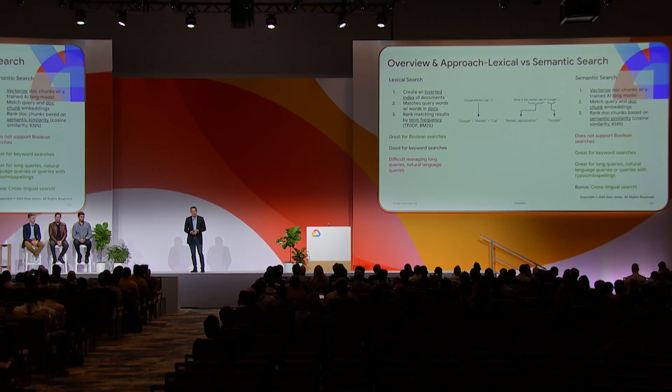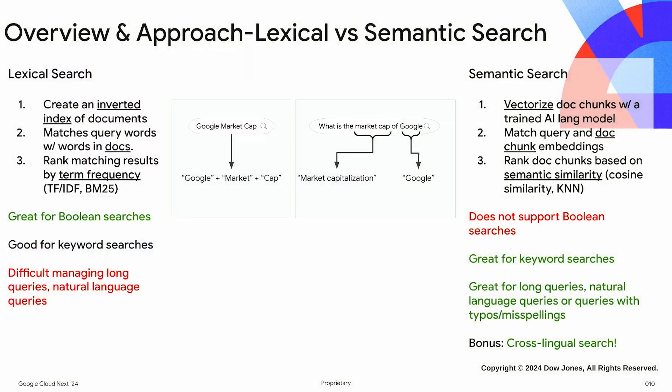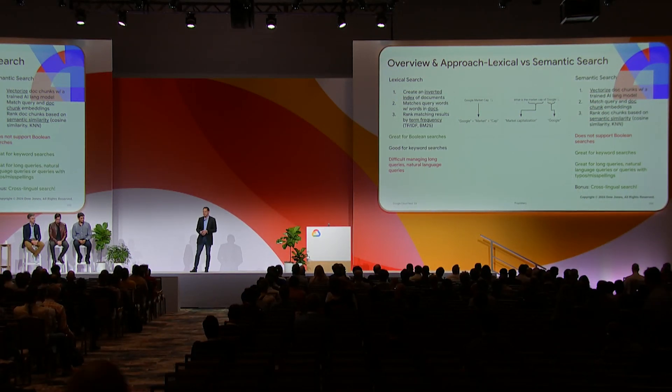Factiva currently uses a powerful lexical and Boolean search engine — you can think of this as keyword search on steroids. This lets our information pros and research pros go very deep around a specific topic, filtering by company, industry, region, dates — there are over a dozen different filtering criteria. But we wanted to broaden our capabilities and introduce semantic search to the product. Semantic search lets our customers use natural language to search our archive and return highly relevant, contextual results. Given our scale — 2 billion documents, processing up to a million documents a day, and our performance KPIs of delivering information within 60 seconds — we knew Google and the Vertex team were the right solution for us.